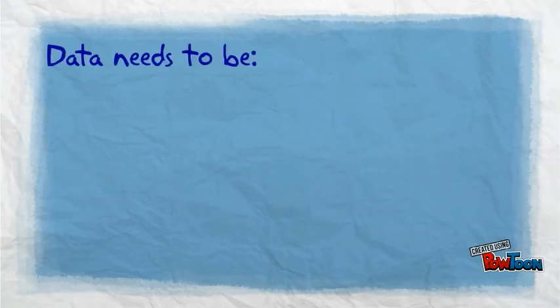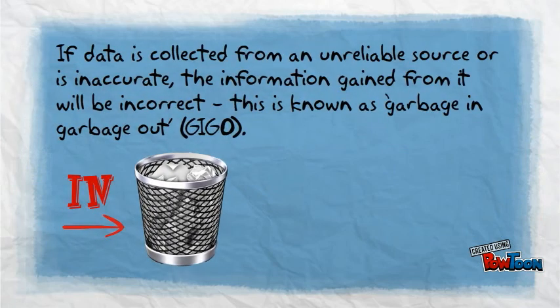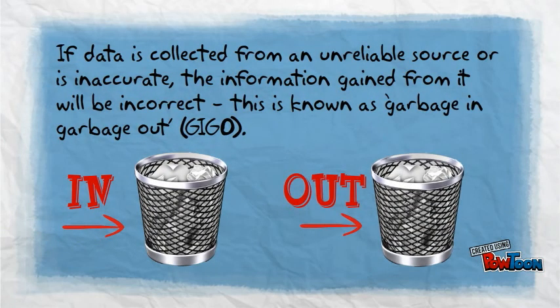Data needs to be up-to-date, relevant, secure and accurate. If data is collected from an unreliable source or is inaccurate, the information gained from it will be incorrect. This is known as garbage in, garbage out.